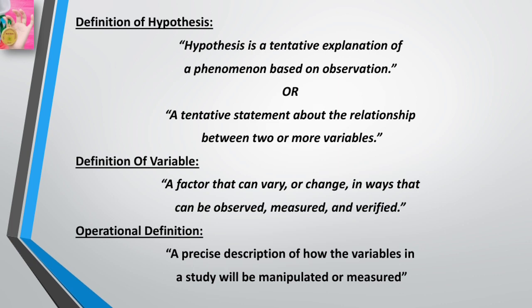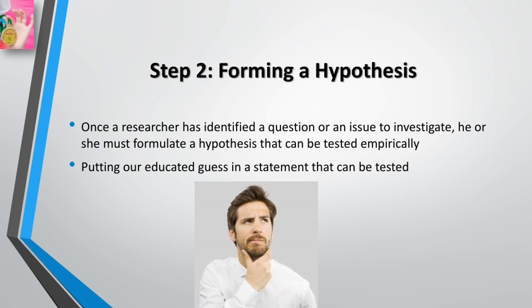A variable is a factor that can vary or change in ways that can be observed, measured, and verified. An operational definition is a precise description of how the variables in a study will be manipulated or measured. Once a researcher has identified a question to investigate, he or she must formulate a hypothesis that can be tested.